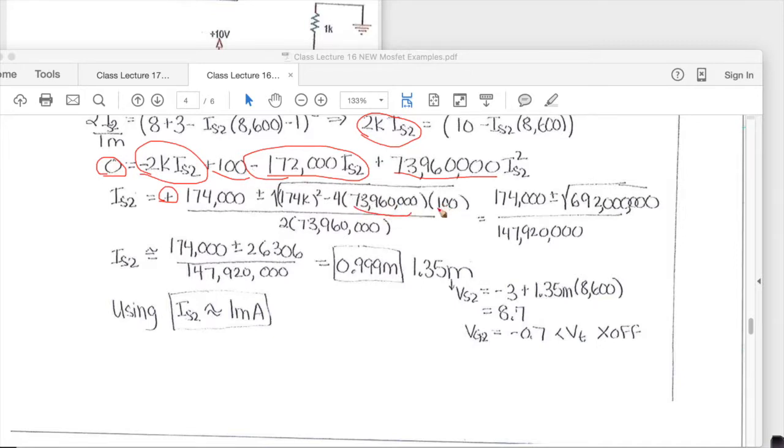So here's your A and your C over 2A. So multiplying that out I get two values. I get approximately 1 milli and 1.35 milli.